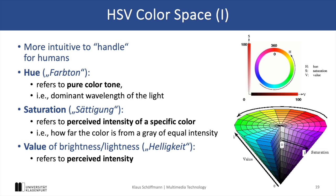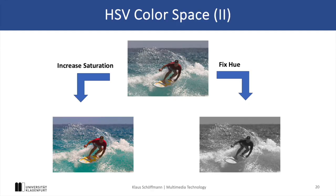HSV also allows for nice color effects in images. For example, if we increase the saturation of each pixel, the entire image would be much more vibrant. And if we fix the hue of each pixel, we can create nice sepia effects.